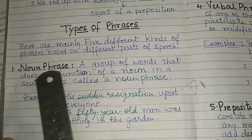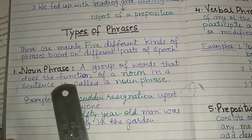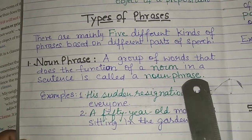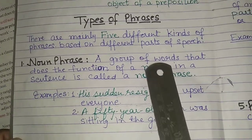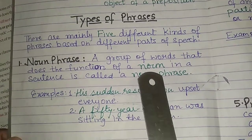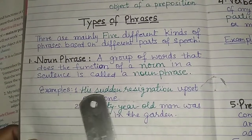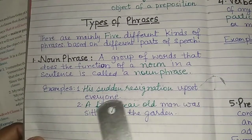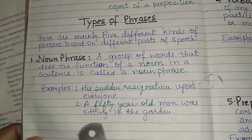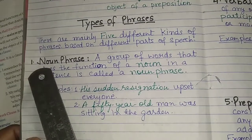Now come to the noun phrase. A group of words that does the function of a noun in a sentence is called a noun phrase. A group of words that functions as a noun is said to be a noun phrase. Examples: 'His sudden resignation upset everyone.' 'A 50-year-old man was sitting in the garden.' These two are examples of noun phrases.